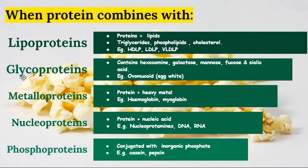When proteins combine with lipids, lipoproteins are formed, like triglycerides, phospholipids, and cholesterol. These are found in cells and serve as transporters of lipids in food. Lipoproteins are HDLP, LDLP, and VLDLP — that is, high density lipoprotein, low density lipoprotein, and very low density lipoprotein.